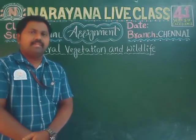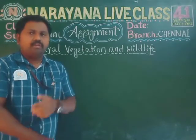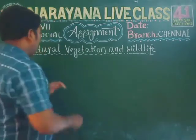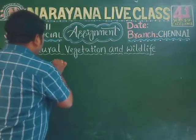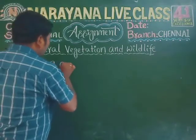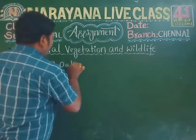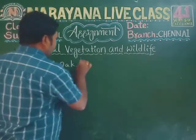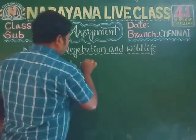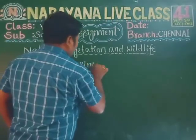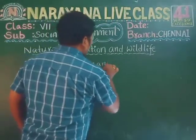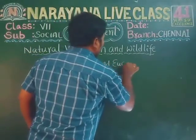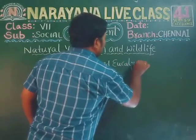The ninth question asks which trees are found in the temperate deciduous forest. The answer is oak, pine, and eucalyptus. So the ninth question answer is oak, pine, and eucalyptus.